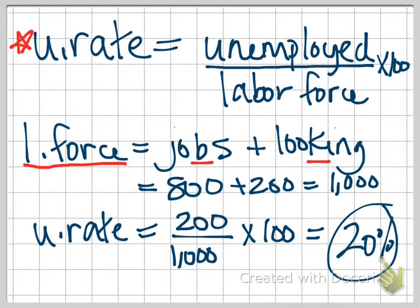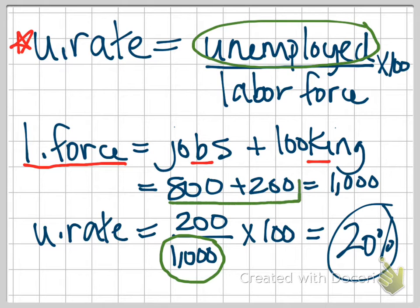So a couple of things here. Again, your unemployed, this top number, is just those who are actively seeking jobs. They're not working, but they really want to. They have to be looking to be part of this number. And make sure when you divide that you're dividing by the entire labor force, those who are working plus those who are unemployed. That 1,000 figure in this example. A lot of times students will just divide by the people that have jobs, the 800, and that will give you the wrong answer. So make sure it's the full labor force.